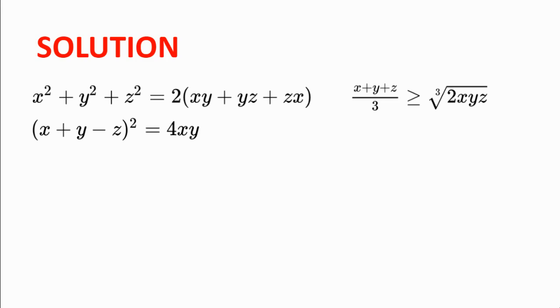Now, we notice the inequality we need to prove is very similar to the AM-GM inequality, except for the fact that there's an extra 2. So we would like to try and prove it with the AM-GM inequality, but obviously we need to change x, y, and z.